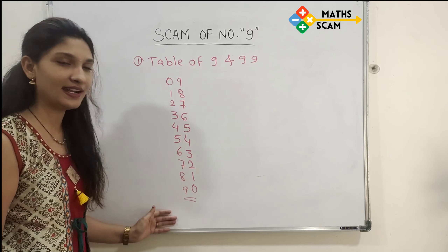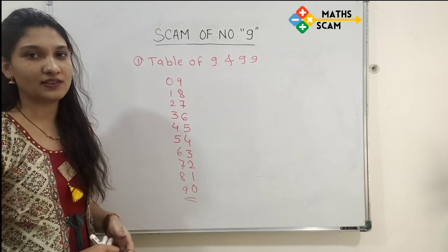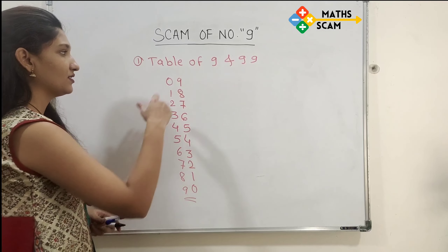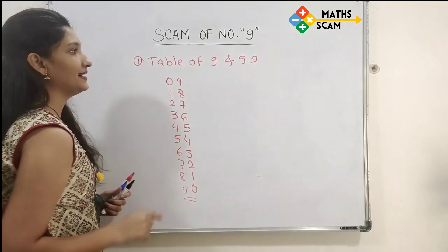This is our table of 9. 9 ones are 9, 9 twos are 18, 9 threes are 27, 9 fours are 36, 9 fives are 45, and so on.